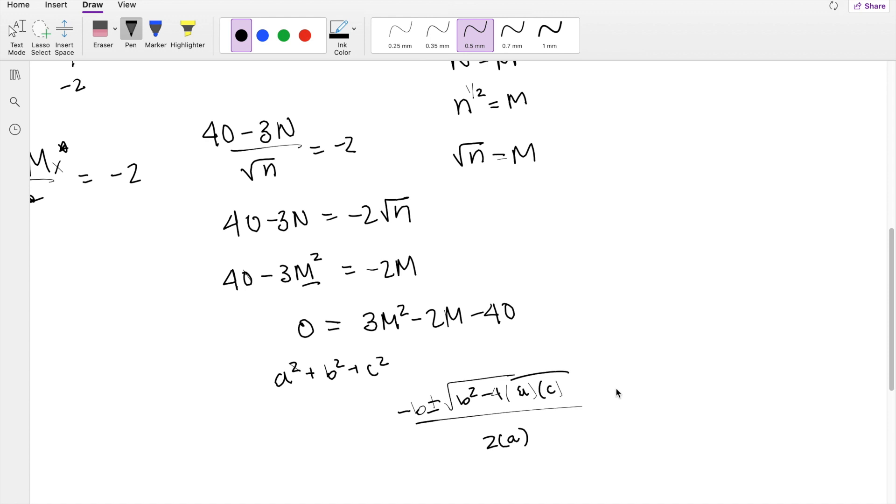So knowing that, this becomes negative negative, so that's 2 plus or minus square root of b squared, so that's 4 minus 4 times a, that's 3, times c, which is negative 40.